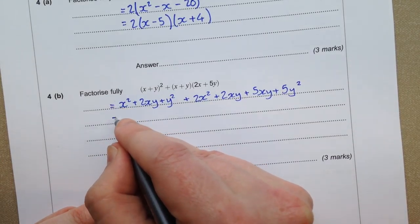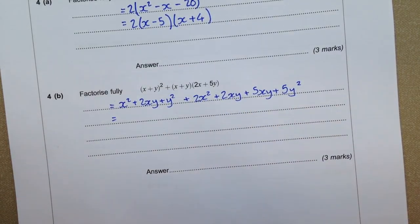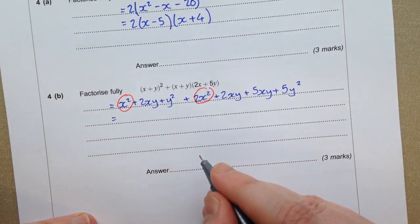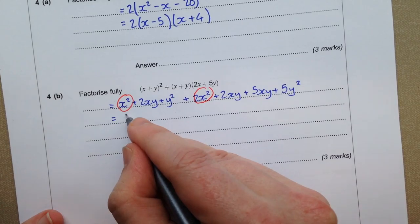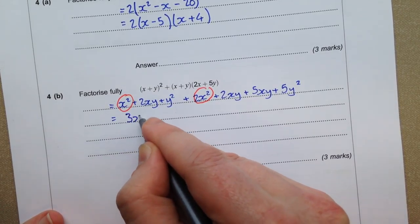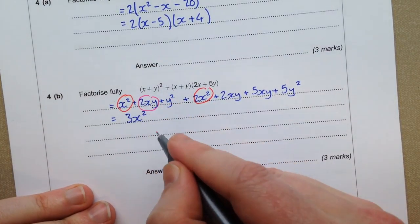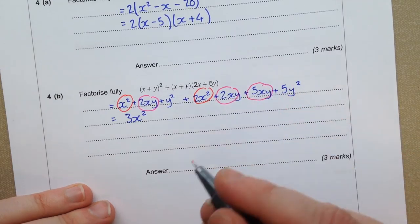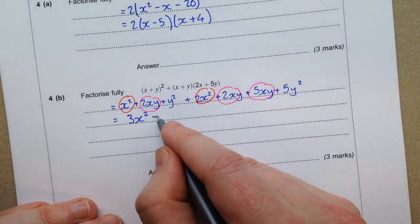So in total we get x squared. And we've got 2x squared here. We've got no other x squared. So that is 3x squared. We've got 2xy from in here. We've got 2xy from here. And we've got 5xy from here. So in total that is 9xy.